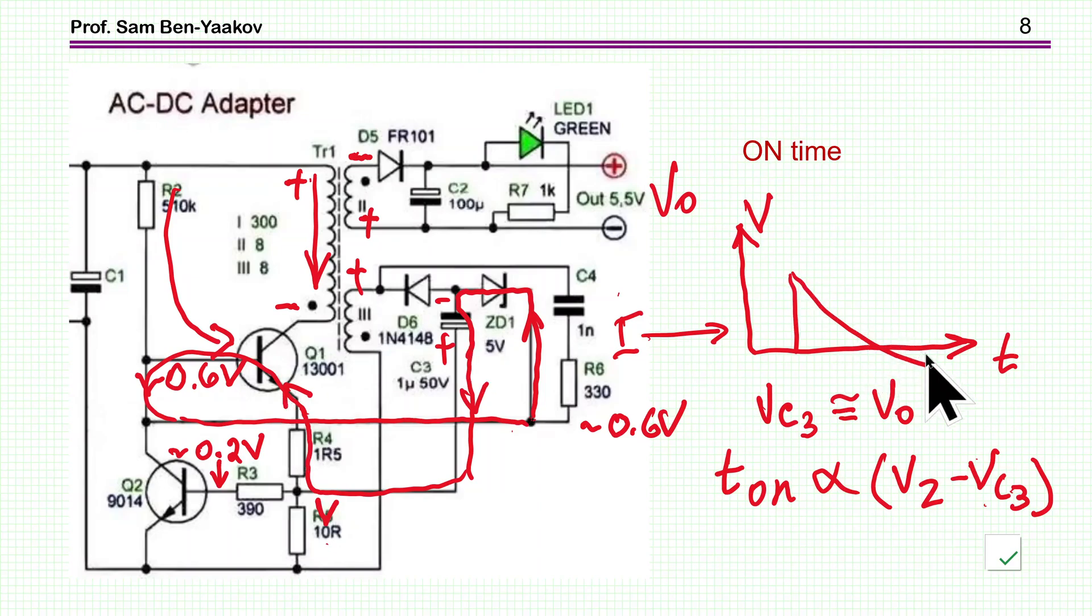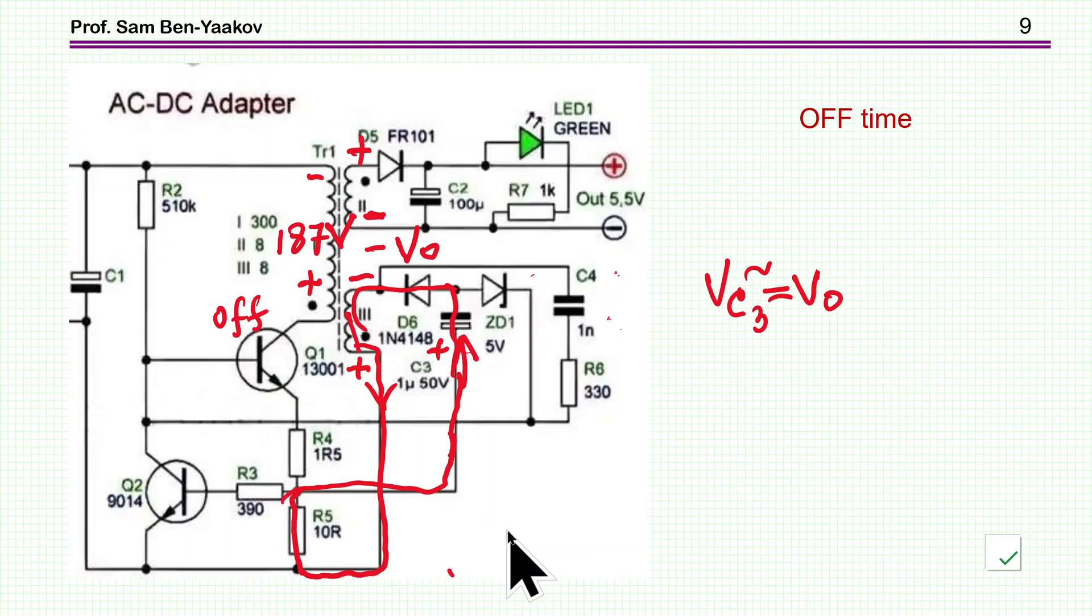So we have this path here. So this is in fact the stabilizing process in which the output voltage is compared to a reference. And when the output voltage is too high, then the on time is becoming smaller. So this is the process of stabilization in this circuit. Now, once the current will go down to zero, then we have now a transition in the opposite direction. So it will flip to the off time.